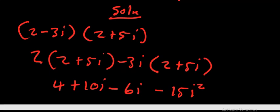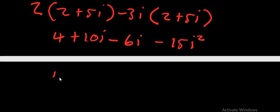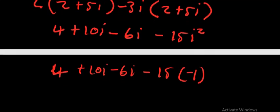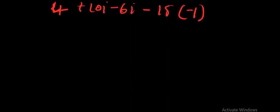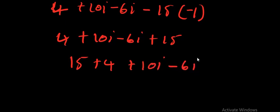Since i × i = i² and i² = −1, we now have 4 + 10i − 6i − 15 × (−1). Wherever there is i² we substitute −1, giving us 4 + 10i − 6i + 15. Collecting like terms: 15 + 4 = 19, and 10i − 6i = 4i. So the final answer is 19 + 4i.